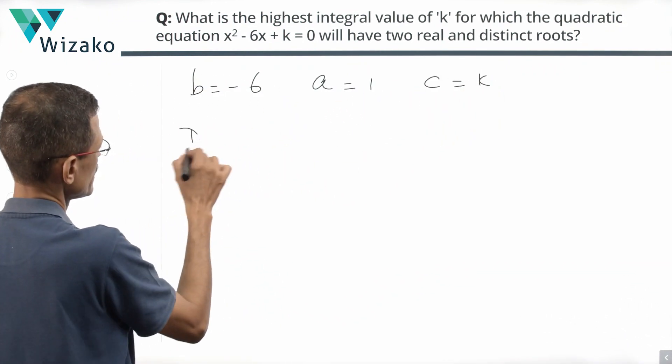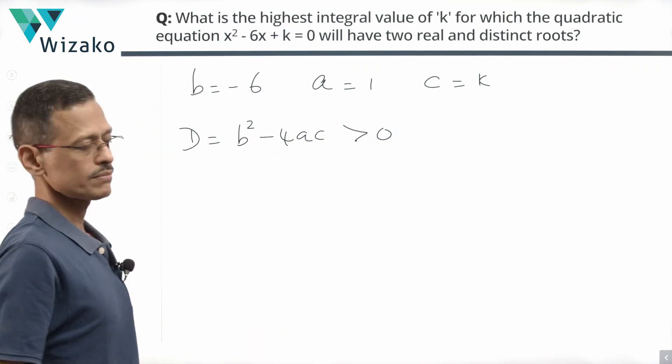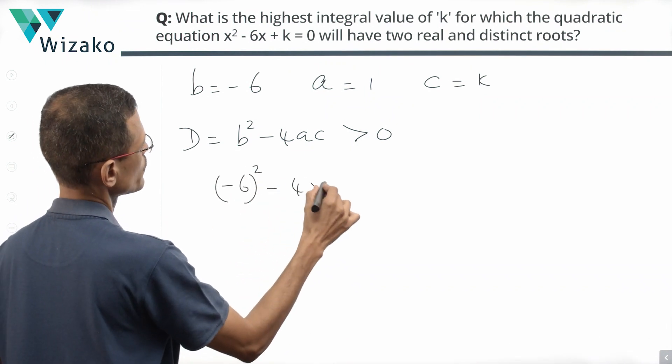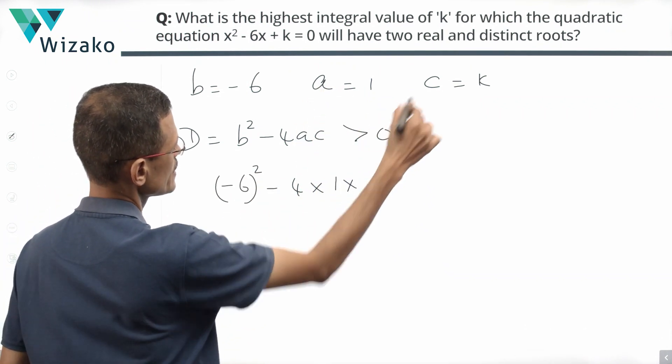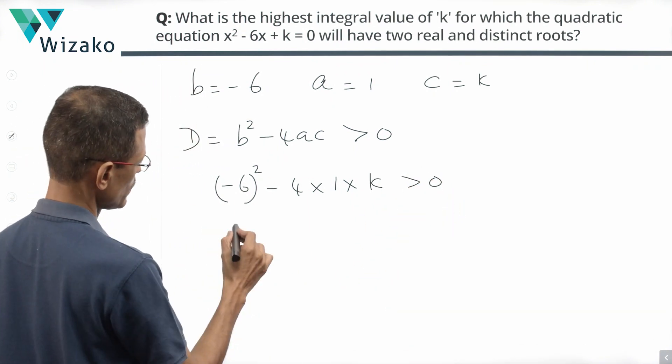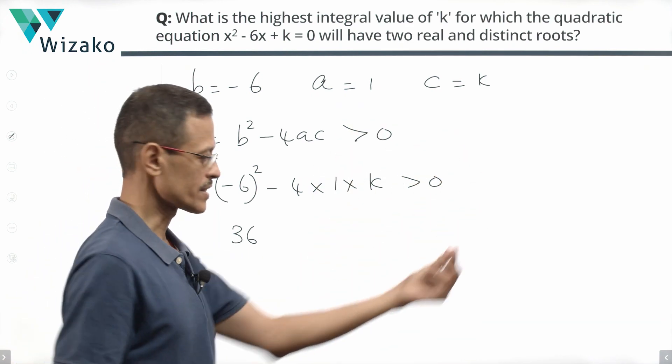So, discriminant is equal to b² minus 4ac, which should be greater than 0. b² is minus 6 squared minus 4 times a is 1 and c is k. This should be greater than 0. Minus 6 squared is equal to 36. Minus 4k is greater than 0.